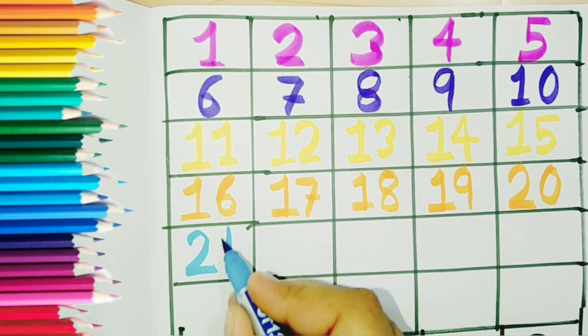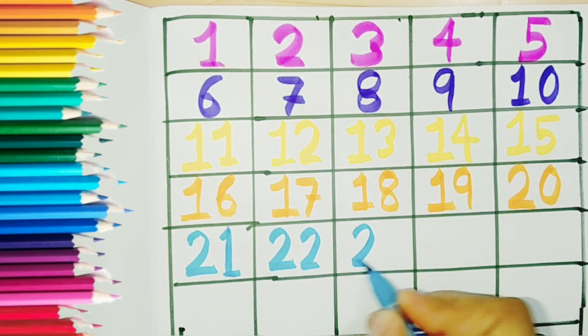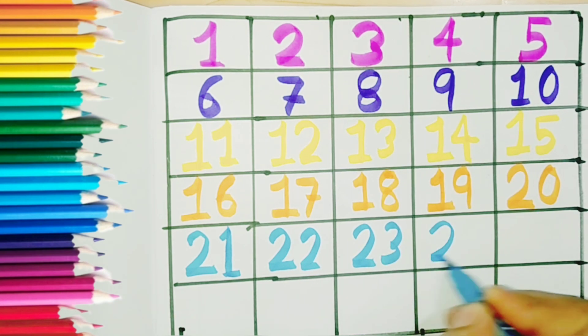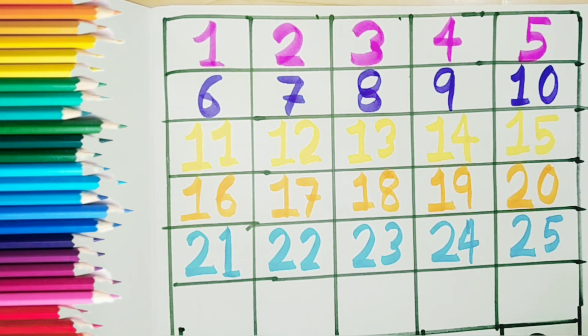Two one, twenty-one. Two two, twenty-two. Two three, twenty-three. Two four, twenty-four. Two five, twenty-five.